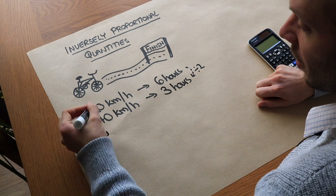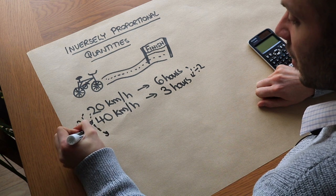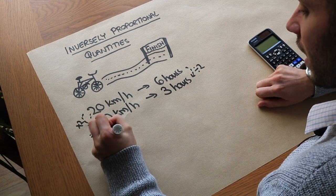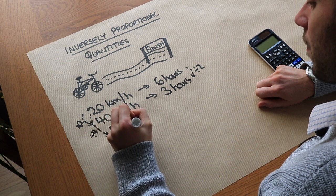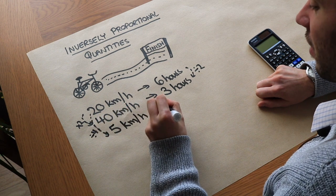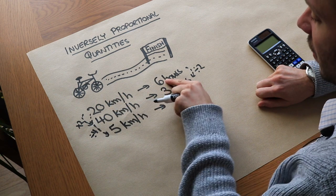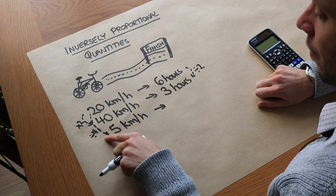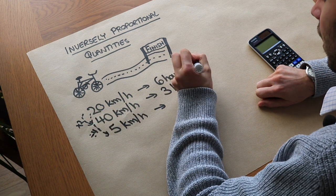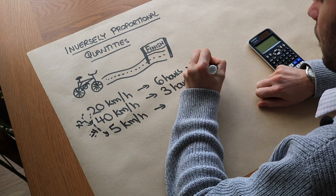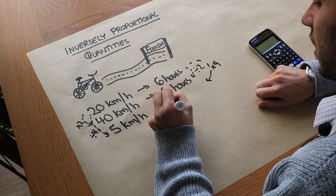Now let's say we were to quarter the speed that we originally went, so we divided the speed by 4 to get to 5 kilometres per hour. That's a very slow speed, isn't it, for a bike. Then what would happen to the time? Well, if you're riding 4 times as slow, it would take 4 times as much time, so it would now take 24 hours.